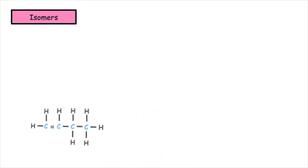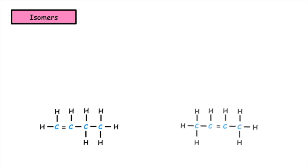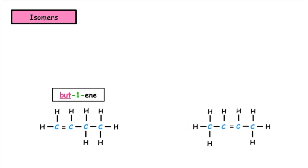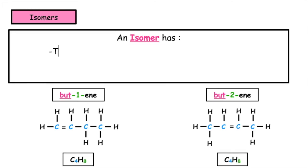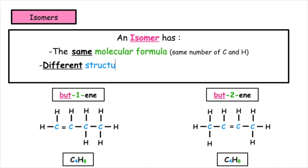As but-1-ene and but-2-ene have the same molecular formula but a different structural formula, this means these are examples of isomers. Remember, an isomer has the same molecular formula, meaning the same number of carbon and hydrogen atoms, but a different structural formula, meaning the atoms are arranged differently.